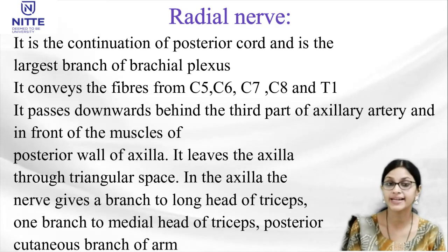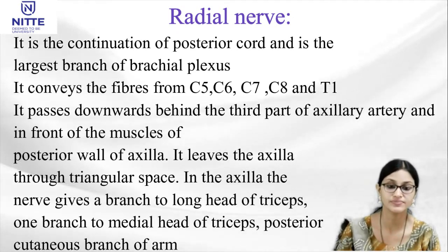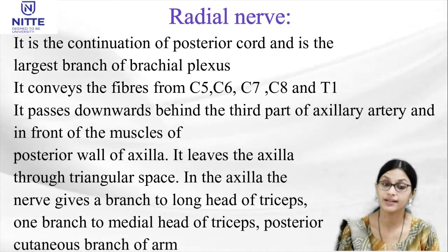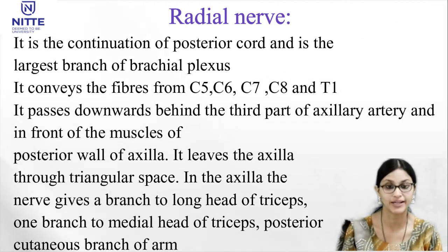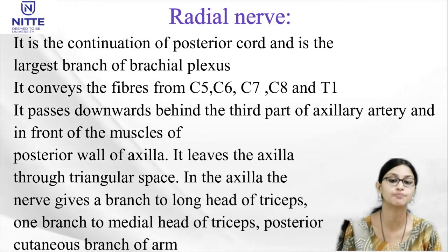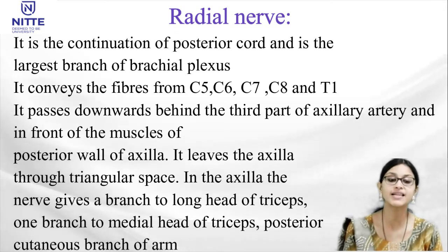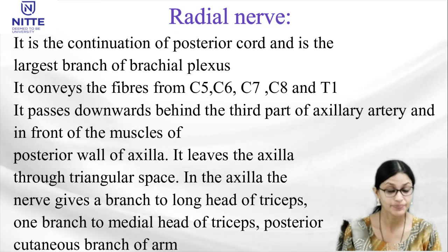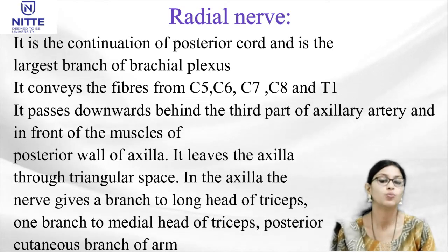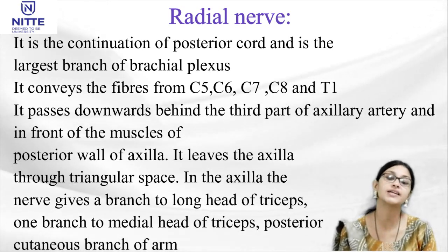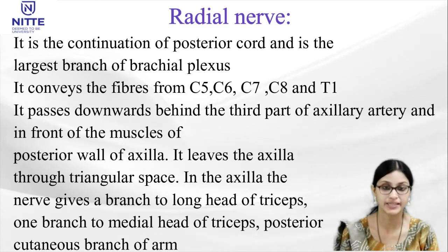The radial nerve is the direct continuation of the posterior cord and is its largest branch, conveying fibers from C5, C6, C7, C8 and T1. It passes downwards behind the third part of axillary artery and in front of the muscles of the posterior wall of the axilla. It leaves the axilla through the triangular space. In the axilla the nerve gives a branch to the long head of triceps, one branch to the medial head of triceps, and the posterior cutaneous nerve of the arm.